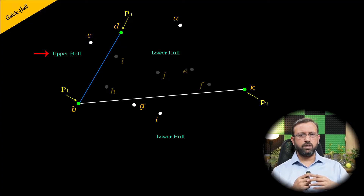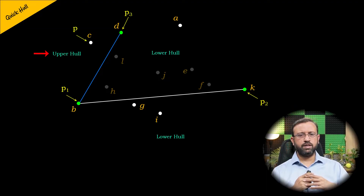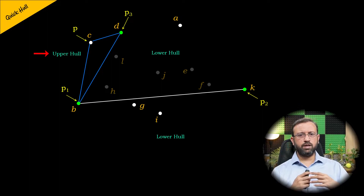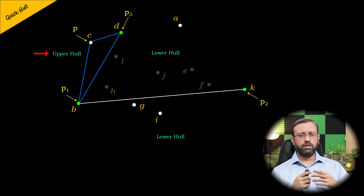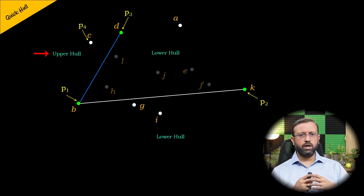To compute the convex hull for the upper hull of line segment P1 and P3, we select a point P from those points. Let us consider point C as point P — the area formed by points P1, P3, and P is computed. Since point C is the only point in this upper hull for P1-P3, the area between P1, P3, and P is the largest, and there are no more points enclosed in this area. So point C becomes point P4 and is part of the convex hull.